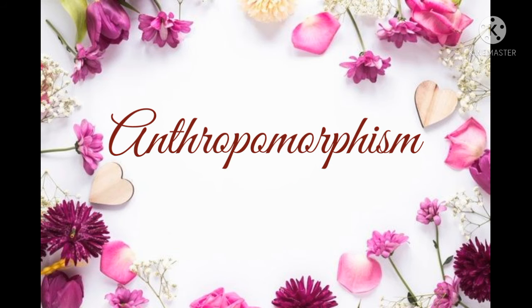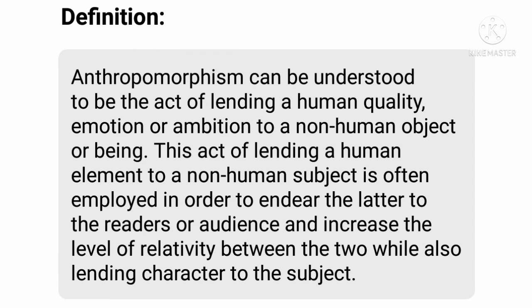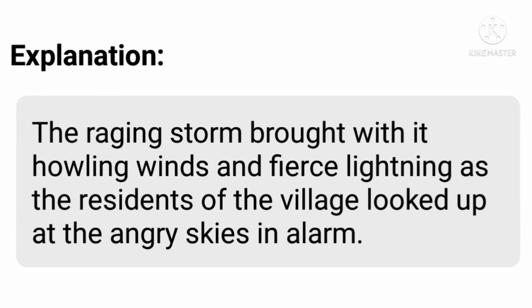Let's focus on the next literary device, which is anthropomorphism. Anthropomorphism can be understood as the act of lending a human quality, emotion, or ambition to a non-human object or being. For example: 'The raging storm brought with it howling winds and fierce lightning as the residents of the village looked up at the angry skies in alarm.' Here, human attributes such as raging, fierce, and angry have been applied to non-living things such as storm, lightning, and sky. In this way, anthropomorphism is used to create more emphasis in the writing.